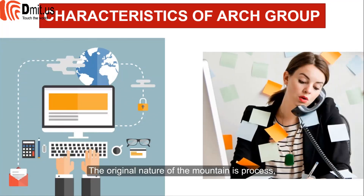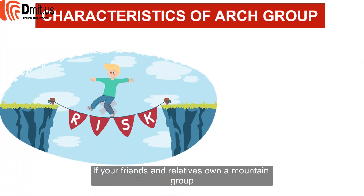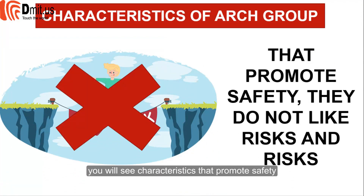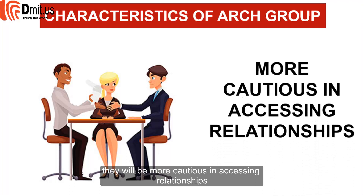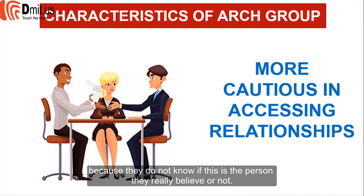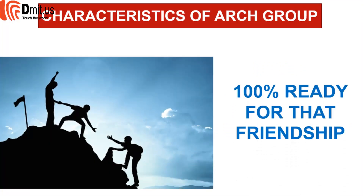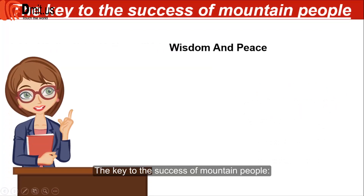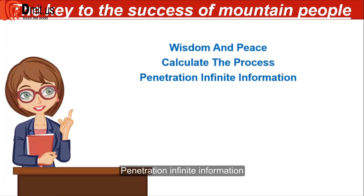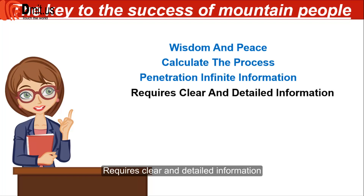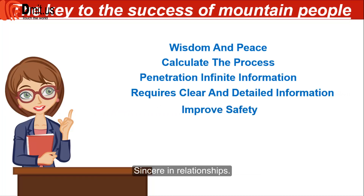The original nature of the mountain is process — not slow or fast, although we will see it appear on the outside. If your friends and relatives own a mountain group, you will see characteristics that promote safety. They do not like risks. Because of the safety factor, they will be more cautious in relationships, not knowing if someone is truly trustworthy. When you become friends with a mountain person, they are 100% committed to that friendship. The key to the success of mountain people: wisdom, peace, calculated process, infinite information penetration, requiring clear and detailed information, improved safety, and sincerity in relationships.